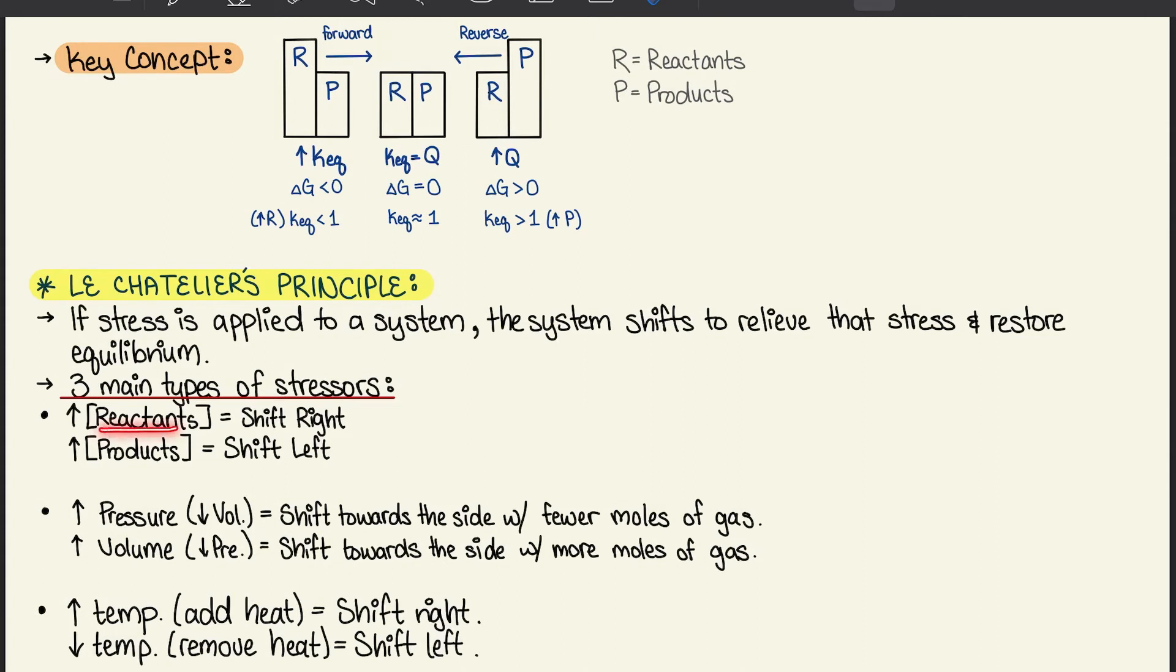Now, if you add more reactants, it's going to shift to the right. And we can see that in the key concept diagram that we touched on before. If you increase products, you're going to shift to the left.